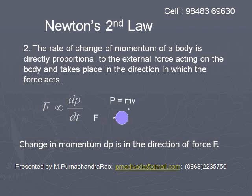To understand momentum, I have shown with a small figure: p is equal to mv, where p is a vector representing momentum, and it is equal to the product of mass into velocity. So, the change in momentum p will be in the direction of external force f.